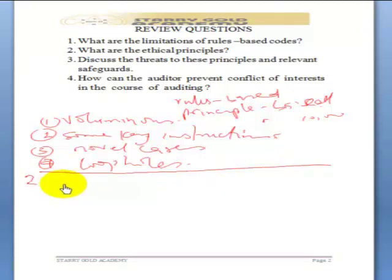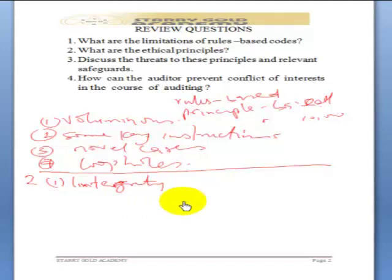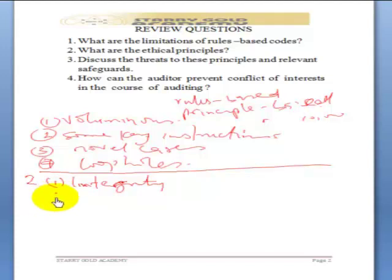So we look at the first one, which I've talked about earlier — that is integrity. The auditor is expected to always act with integrity, to be honest, to say the truth, to act in honesty at all times. So the auditor is not supposed to be caught in anything that is dishonest or to say anything that does not reflect integrity.